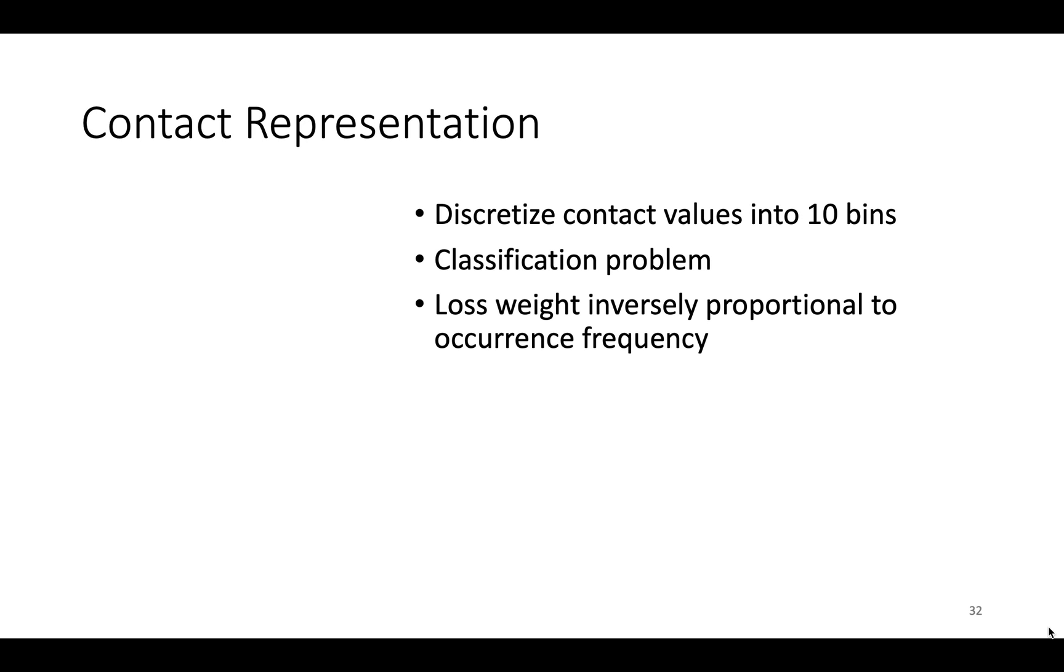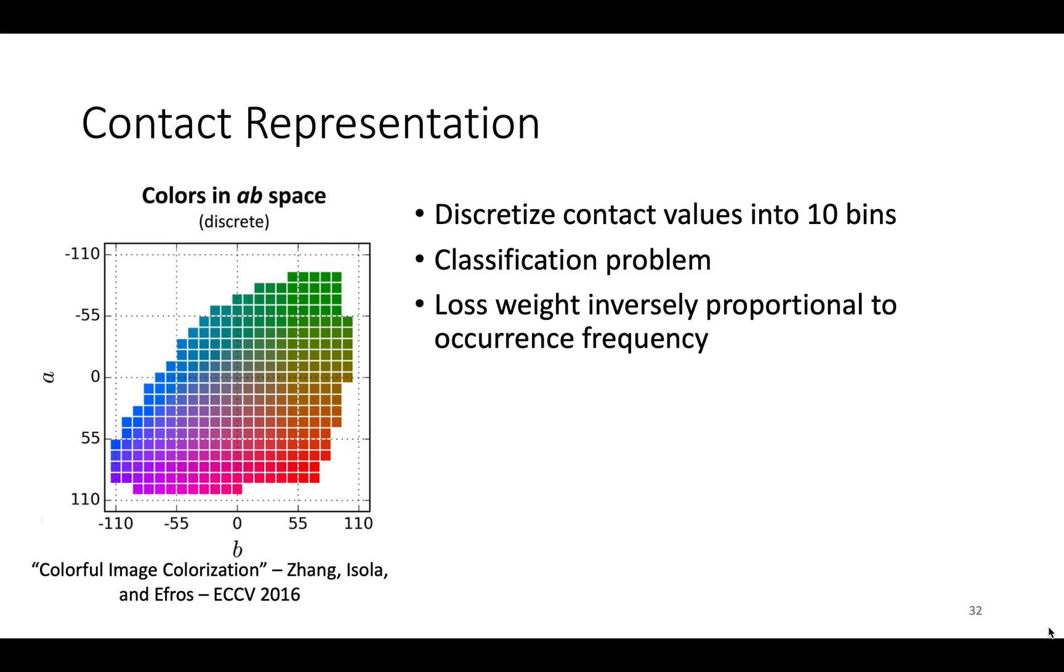It is desirable to represent contact as a continuous value to capture all the nuances present in the ground truth. But we found that simple regression is biased towards predicting no contact, because that is the most frequent label. We can get better results by discretizing the contact values, performing multi-class classification, and adjusting the loss by the occurrence frequency of the quantizations. This is inspired by image colorization work from Zhang et al.